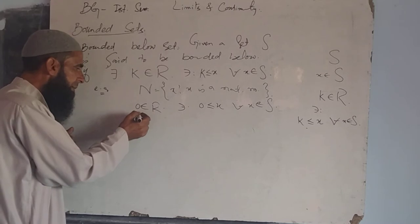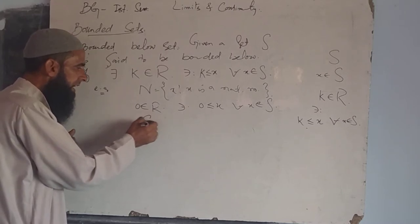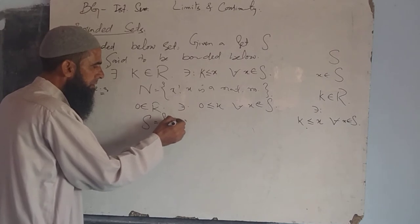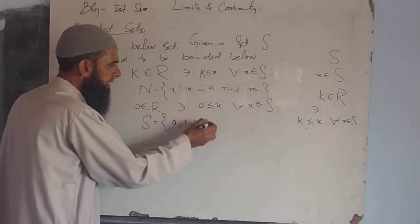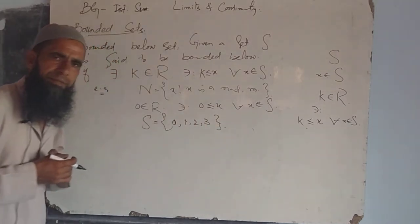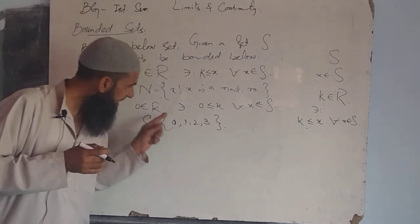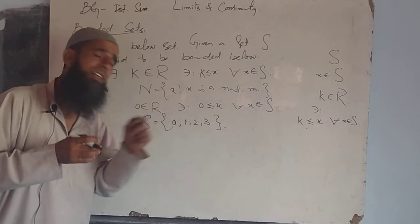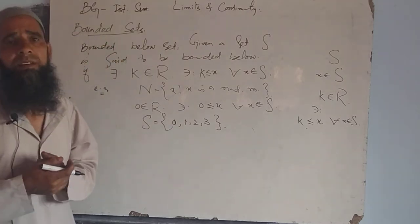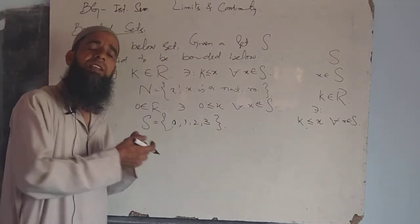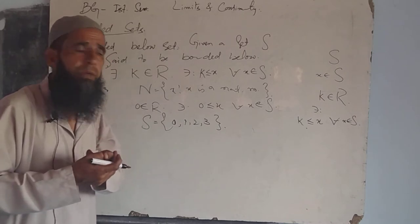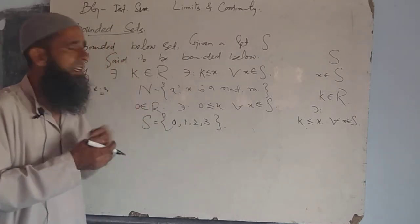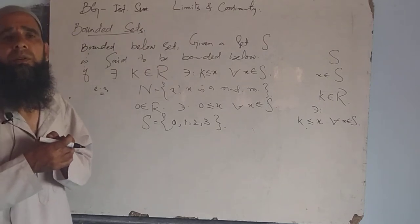As another example, taking S equal to {0, 1, 2, 3}. Clearly, all the elements of this particular set are greater or equal to minus 1, greater or equal to minus 2, greater or equal to minus 1/2. This implies this set is also a bounded below set.